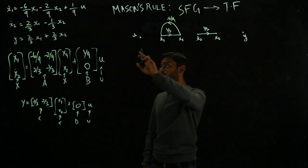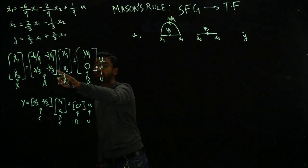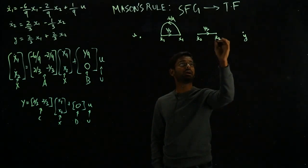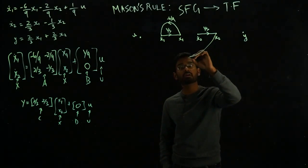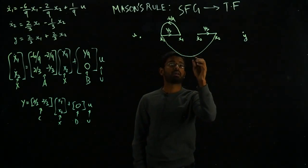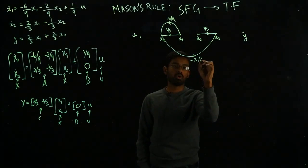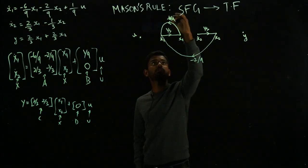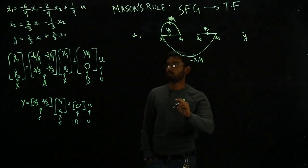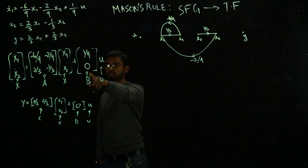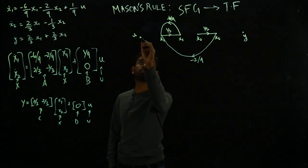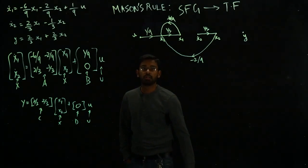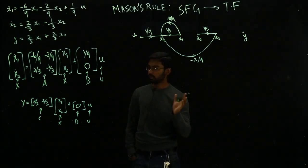And then what else? I have minus 2 over 9 x₂. So I need minus 2 over 9 from x₂. Minus 2 over 9. And then from the input I also have a contribution which is 1 over 9. So that gives me x₁ dot.